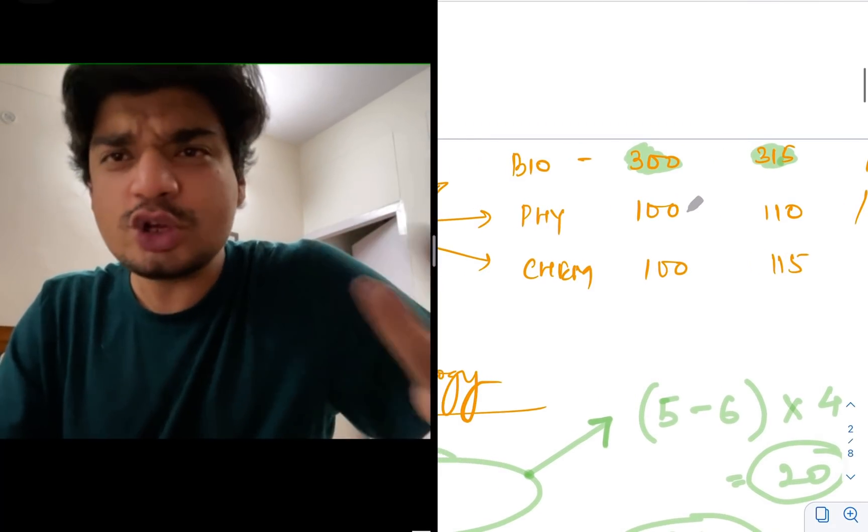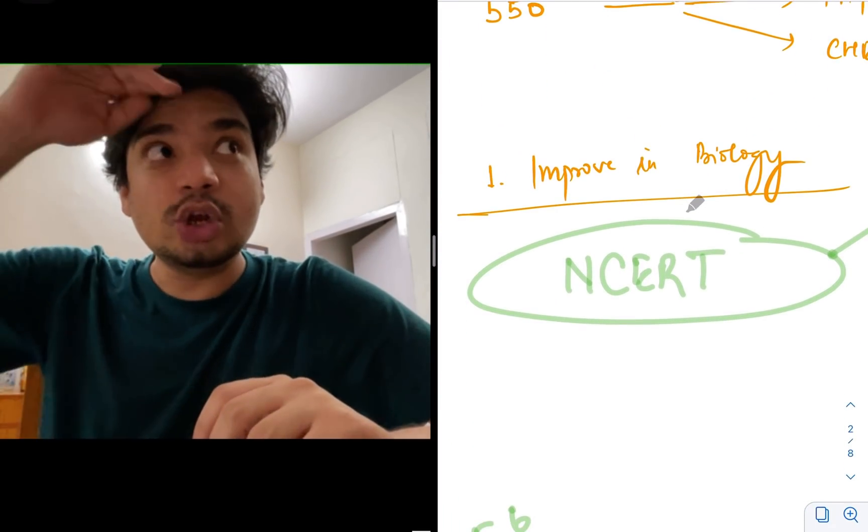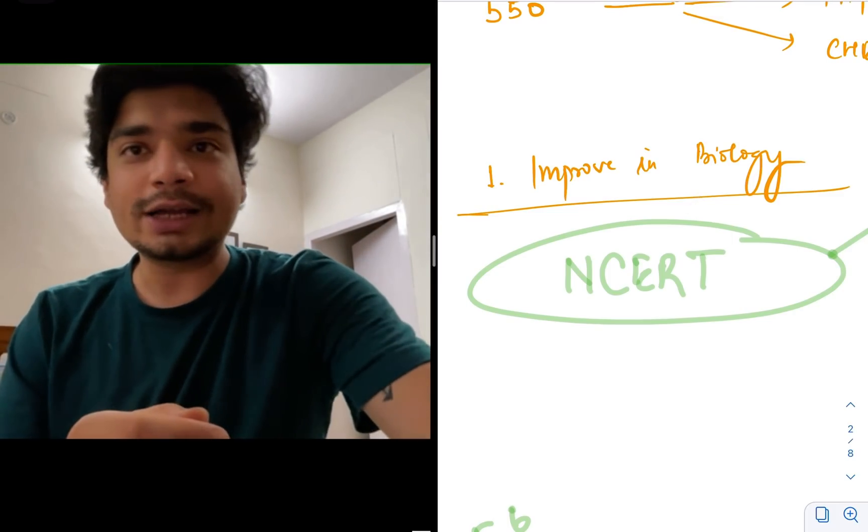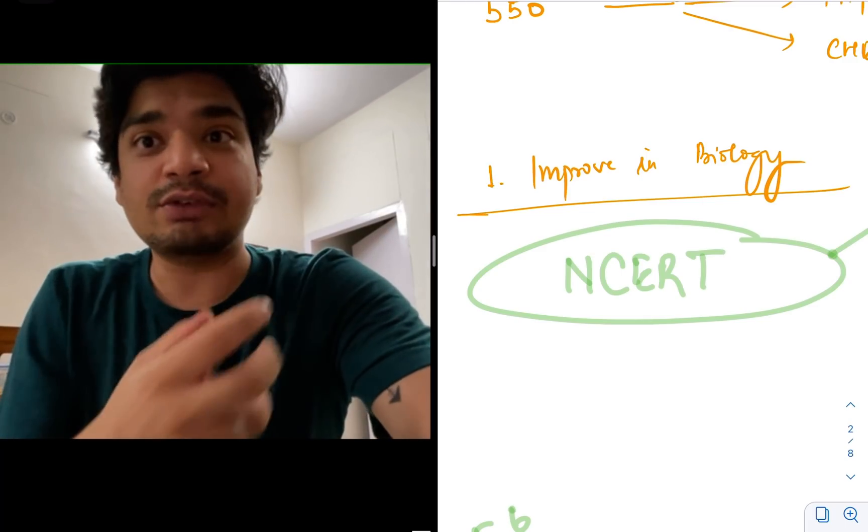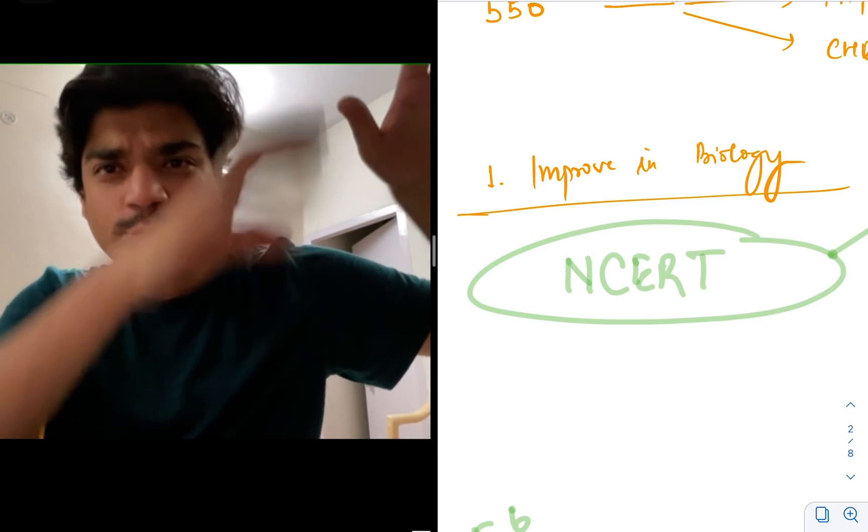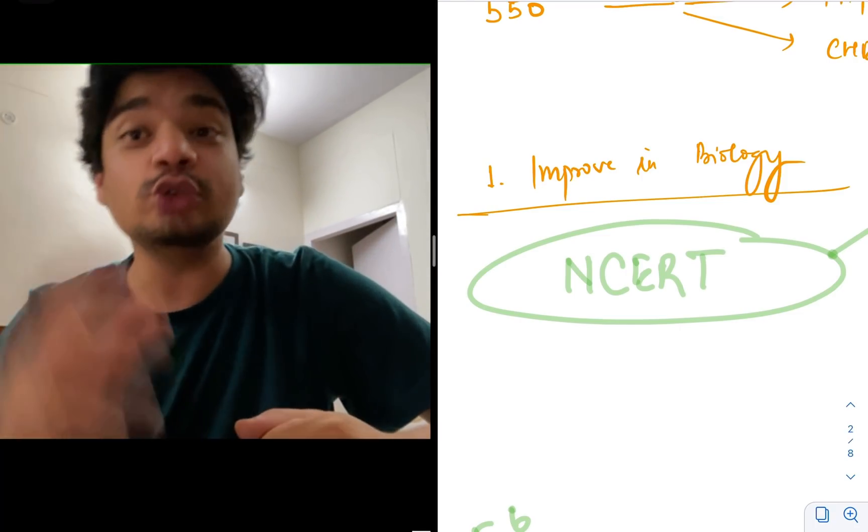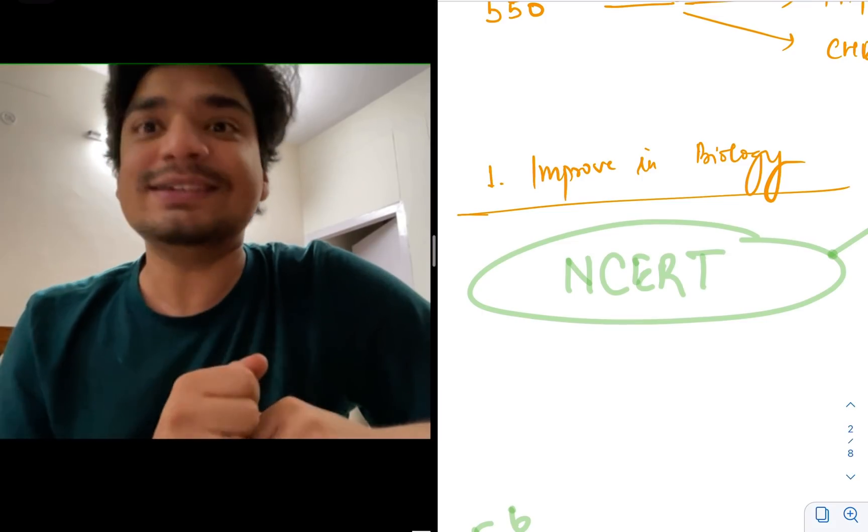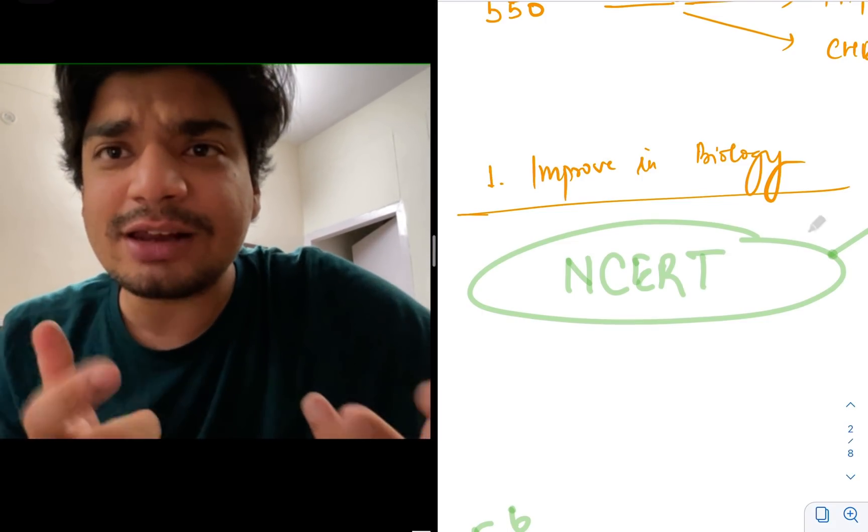Now how do you improve your marks? First and foremost, hit for the low-hanging fruit. This is a concept that whenever you want to have a fruit from a tree, there are certain fruits which are hanging low. If you hit a small stone or just with your height, you can get them. So hit for the things which are easiest. And what is the easiest thing to improve for any NEET aspirant? It's biology.